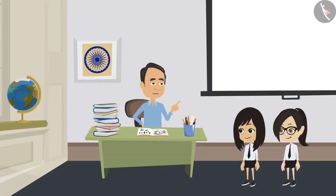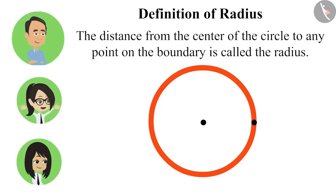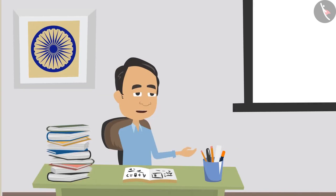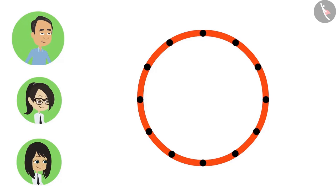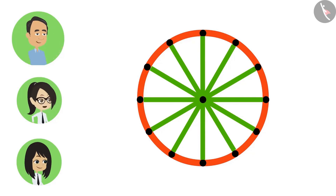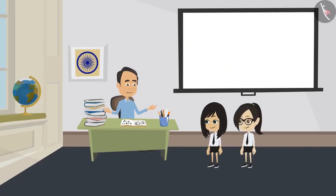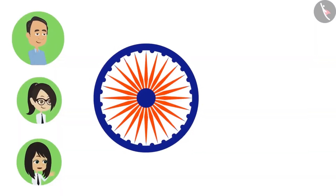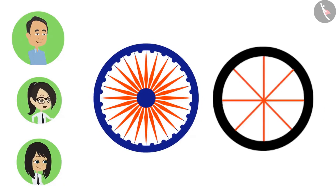No, you got it wrong. Tell me what is the radius. Radius is the distance from the center to any point on the boundary of the circle. And how many points can there be on a circle? There can be many. And lines can be drawn from the center to all those points — we will call them radius. So there can be several radius in one circle, like in the Ashok Chakra and also in the wheel of our bicycle. Today we learned: when the length of the radius is greater, a large circle is formed. As the length of the radius decreases, a small circle is formed. And there are many radius in one circle.